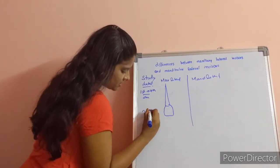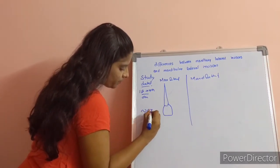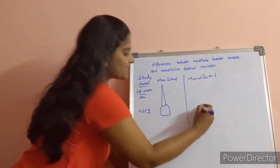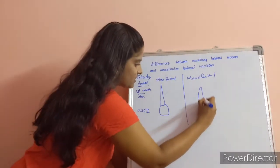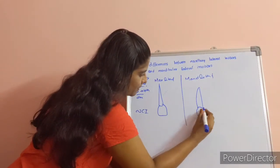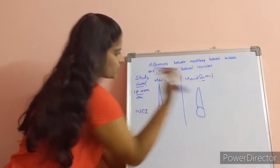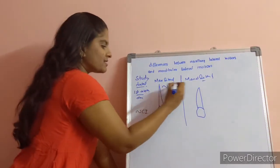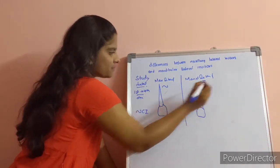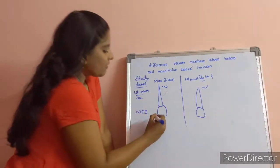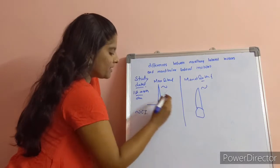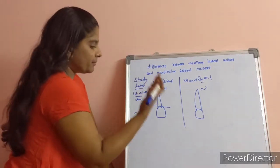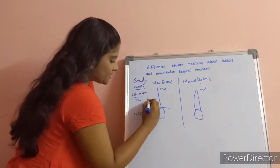Now, the maxillary lateral incisor will be similar to the maxillary central incisor, and the mandibular lateral incisor will be similar to the mandibular central incisor. Now coming to the labial view — when we look from the labial side, we observe the following features.